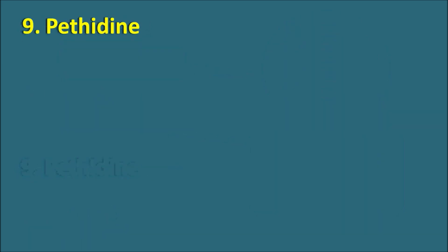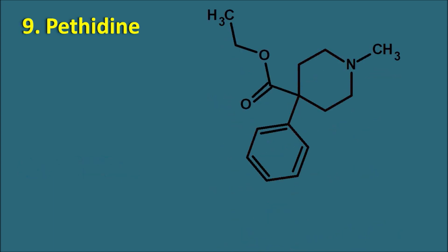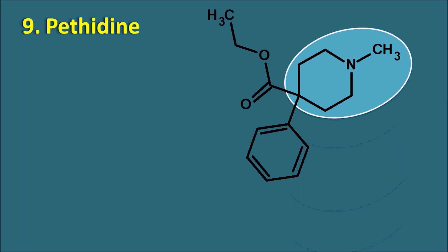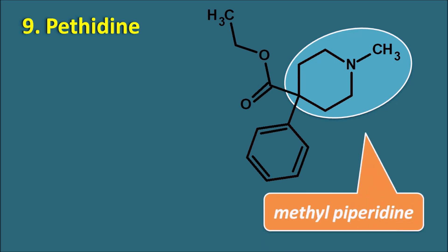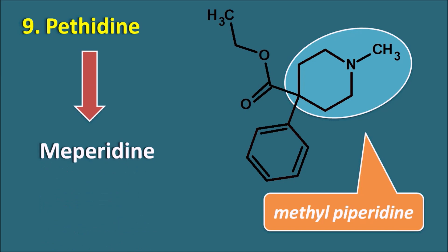The ninth one is pethidine. Pethidine is having the ring system with a piperidine ring attached with a methyl group. Pethidine is one of the opioid derivatives having the phenylpiperidine ring system. Because this drug has the methyl piperidine group, it can also be called as meperidine. Meperidine is derived from methyl piperidine — 'ME' from methyl and 'peridine' from piperidine. So meperidine is a methyl piperidine derivative belonging to the chemical class of phenylpiperidines.